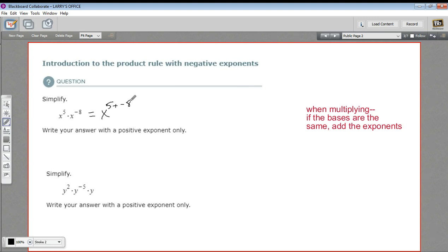Well, five plus a negative eight is the same as five minus eight. And that's going to be a negative three. The only problem here is that it says write your answer with a positive exponent only. So how do we turn this x to the negative three into a positive exponent?